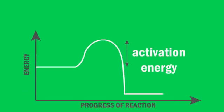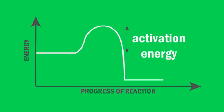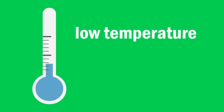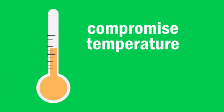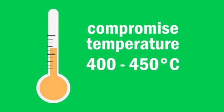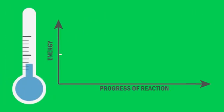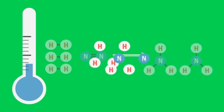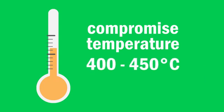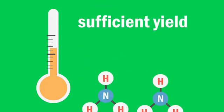Since the forward reaction is exothermic, it would make sense to conduct this reaction at a low temperature. The compromised temperature is 400 to 450 degrees Celsius, which is not exactly low, but not too high. If a low temperature were used, the rate of reaction would be very slow, though the exothermic reaction would be favored. It would actually take a long time for equilibrium to be reached, so a compromised temperature of 400 to 450 degrees Celsius ensures that the reaction proceeds with sufficient yield.